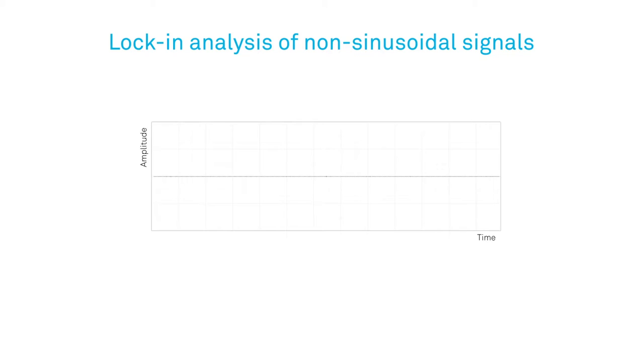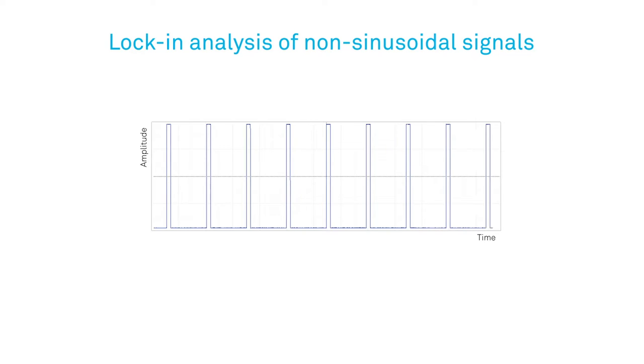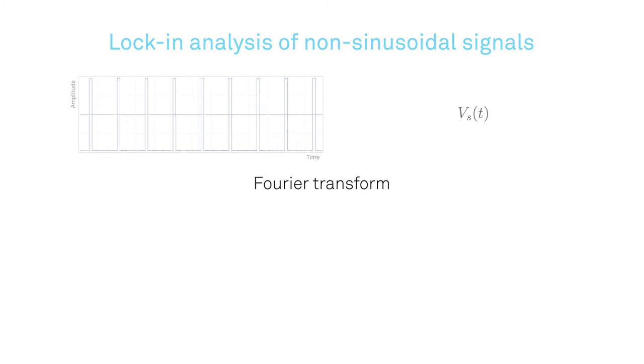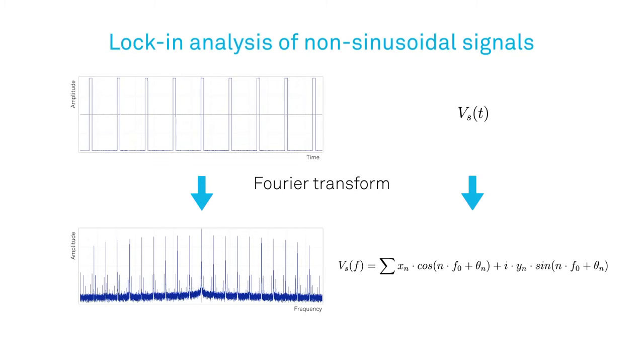In order to understand the whole demodulation process of mixing and subsequent filtering for non-sinusoidal signals, we can make use of the Fourier theorem. It states that every periodic function can be expanded as an infinite sum of linear independent functions of sine and cosine terms.